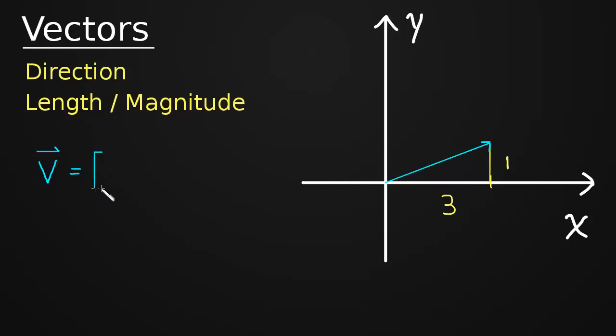It's equal to its X component, which is 3, how much it moves over in X, and its Y component, which is 1, which is how much it moves up in Y. So again, this is the X component and the Y component.